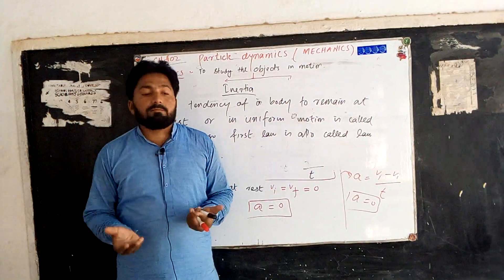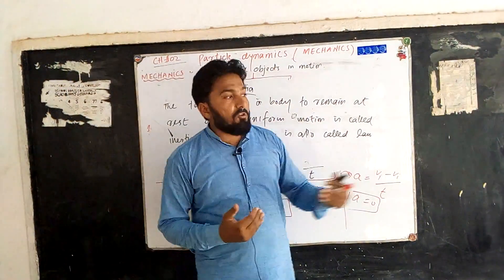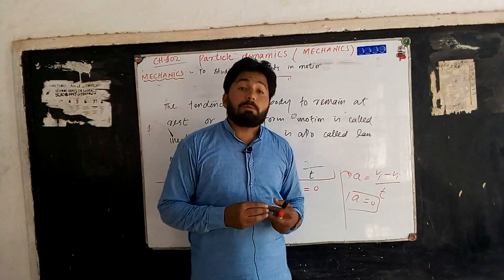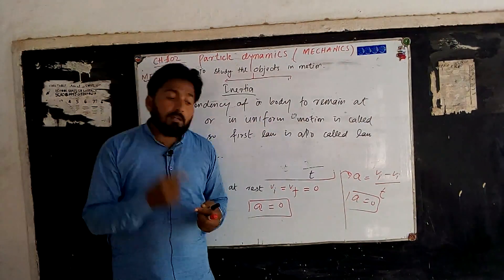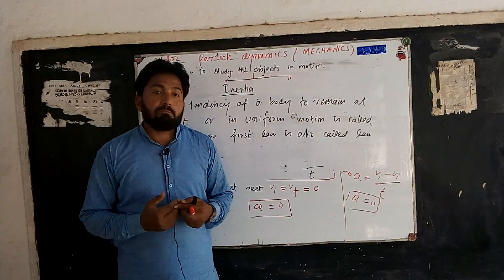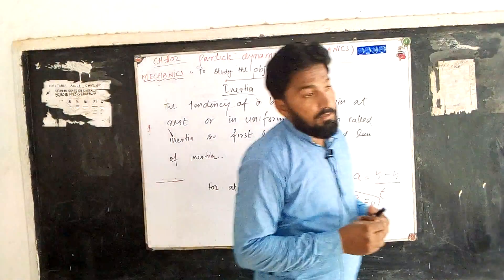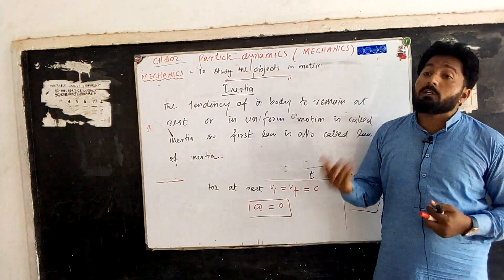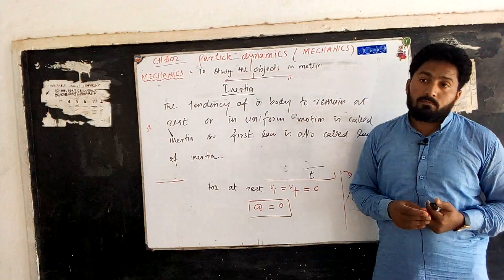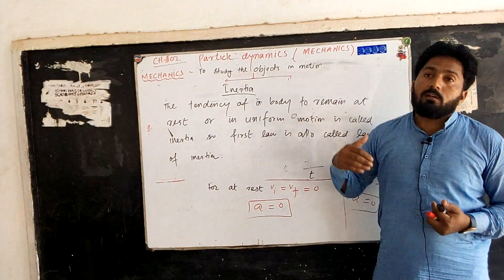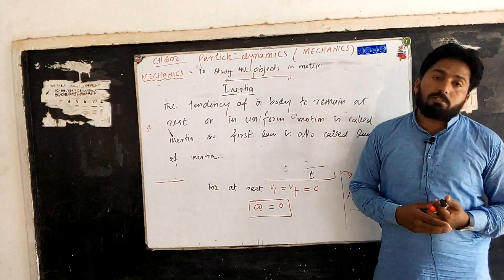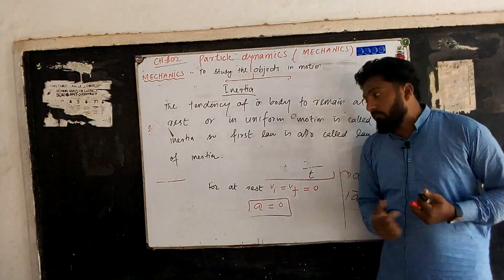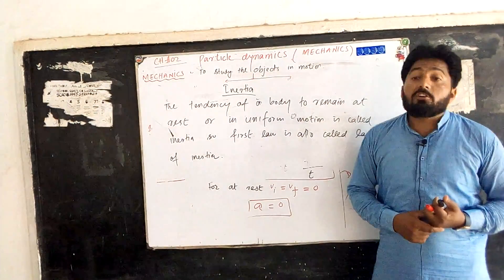Similarly, if a book is in a car traveling at uniform velocity, the book also remains at rest — you can verify this experimentally. But if the driver applies brakes, meaning the velocity changes, an acceleration is produced. That frame is no longer inertial; it becomes non-inertial. All accelerated frames of reference are called non-inertial frames of reference.